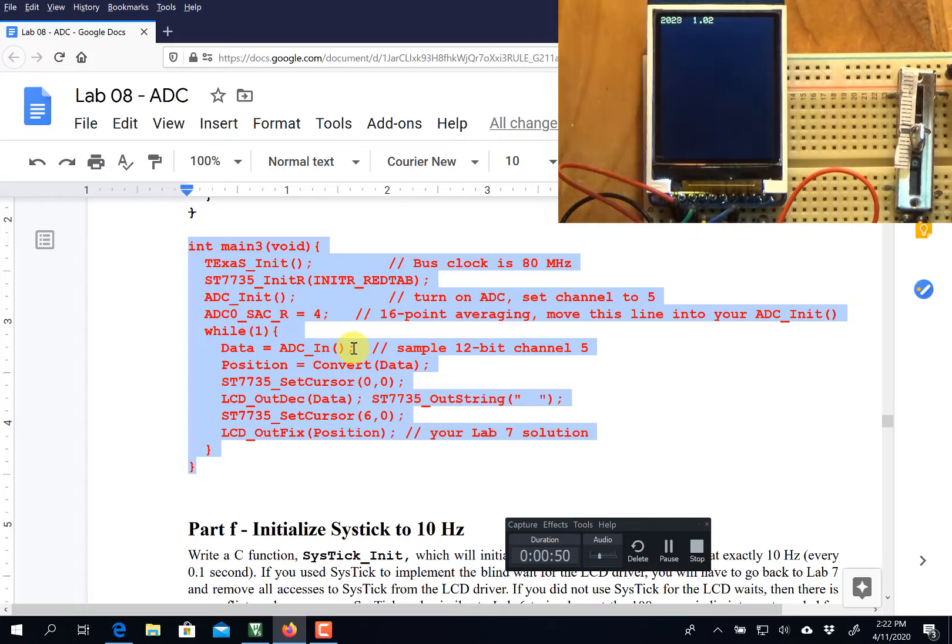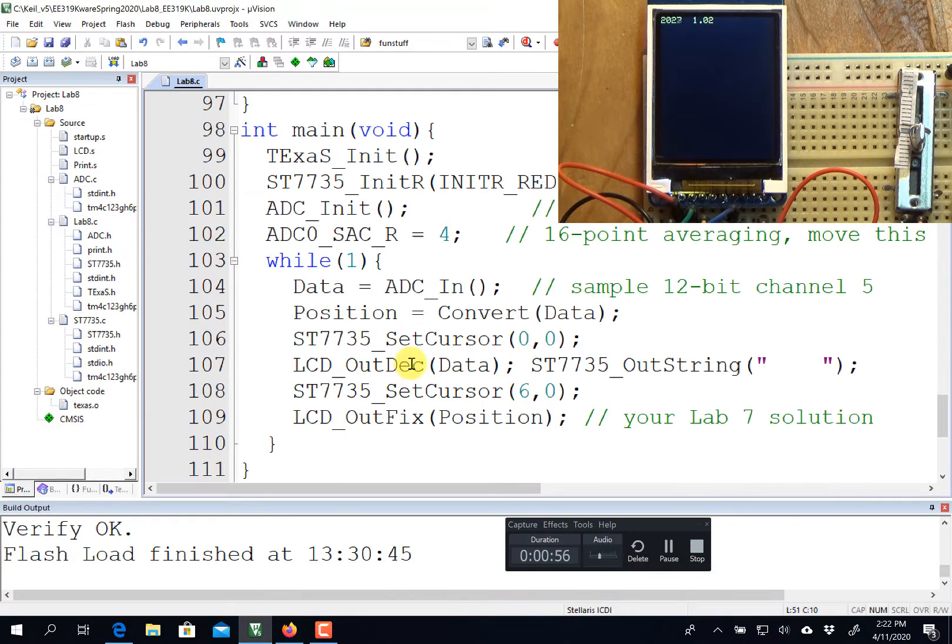I'm going to copy that and go to the text editor Kyle and paste it in. Like I said last time, I introduced some hardware averaging. If your data is jumping around a lot you can increase this. If you put this as a 5, that'll be a 32-point averaging. It'll take twice as long to convert but the data will be less noisy.